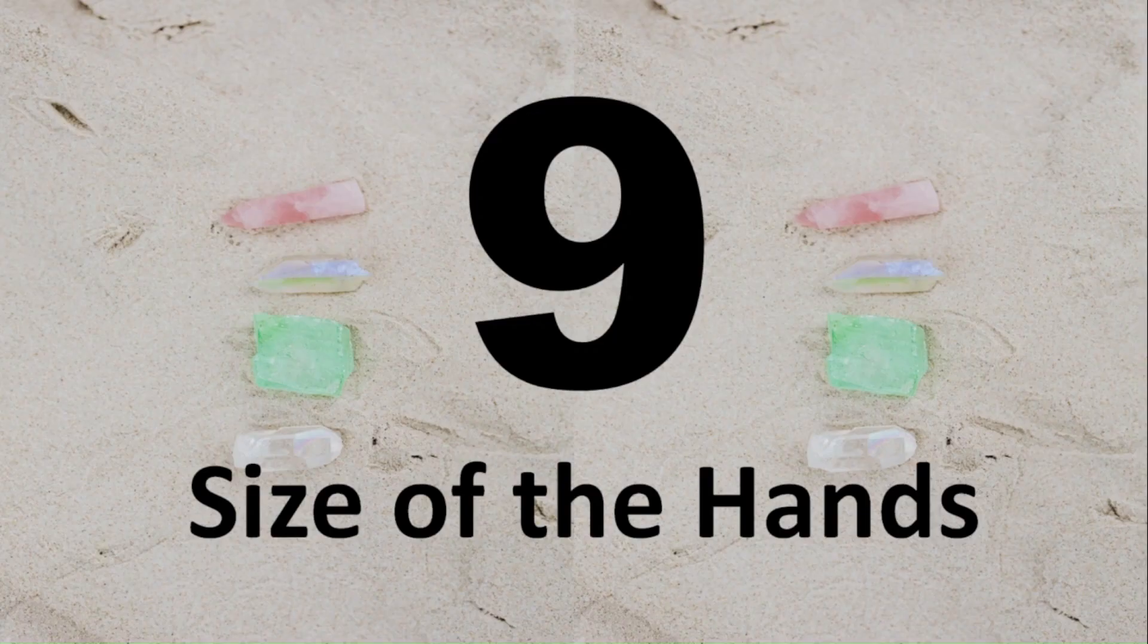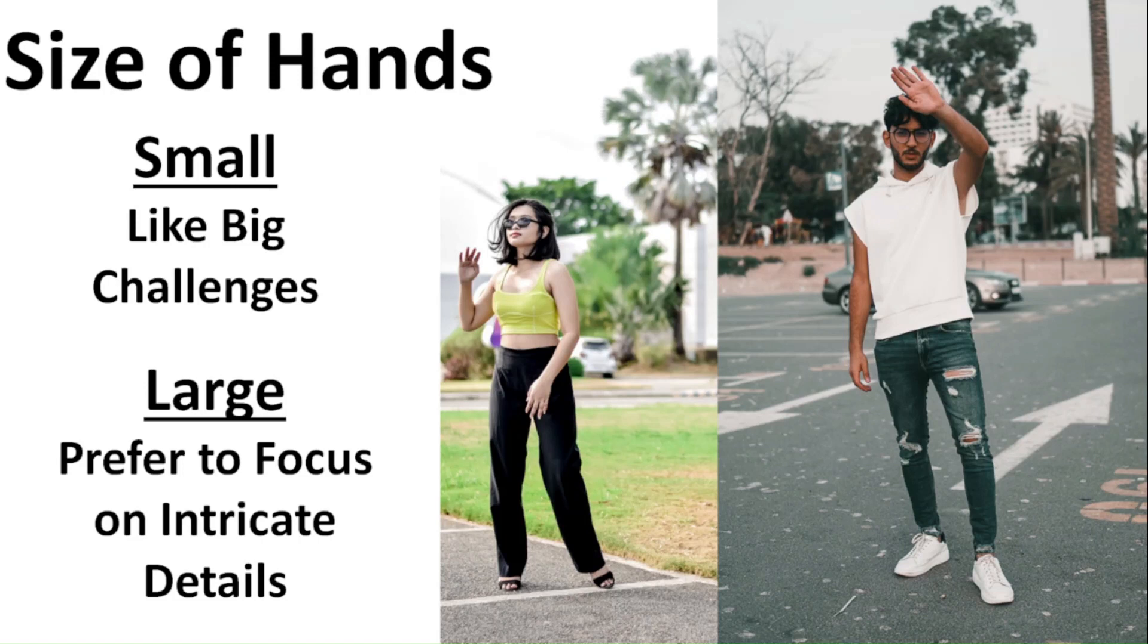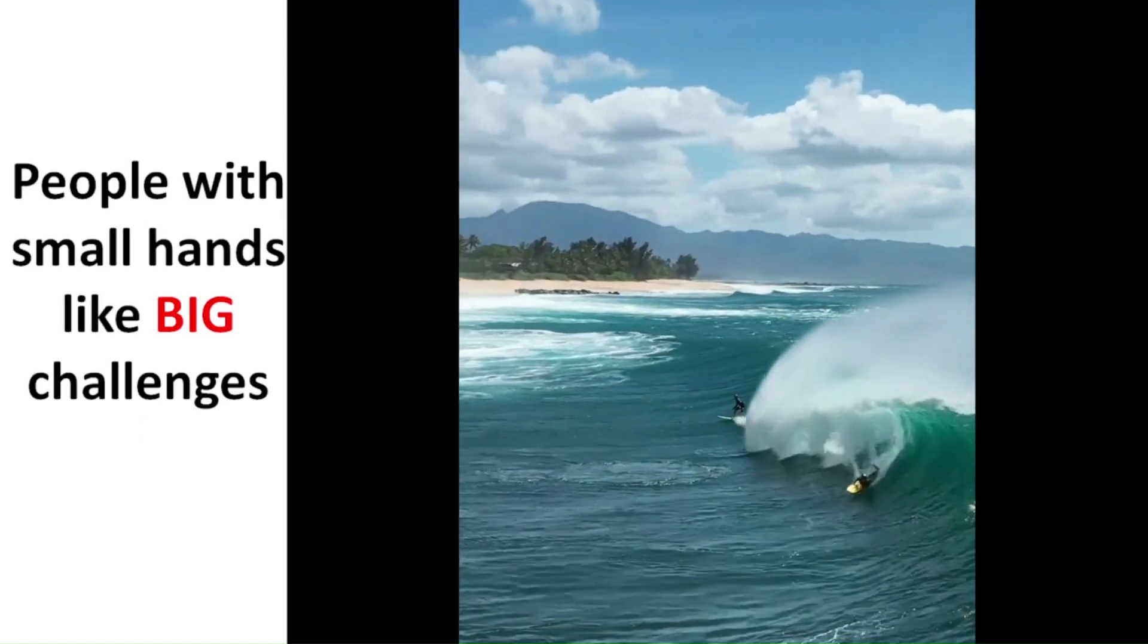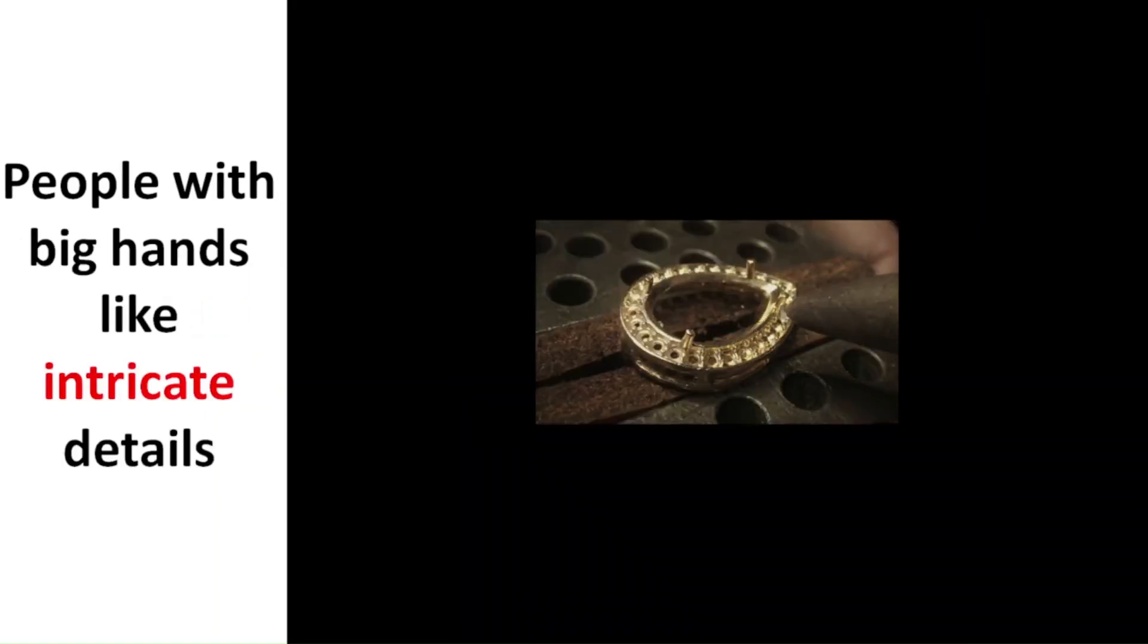Number nine, the size of the hands. When determining the size of a person's hands, it's relative to the size of their body. It's been said that people with small hands like big challenges. While people with big hands prefer to focus on intricate details like making jewelry.